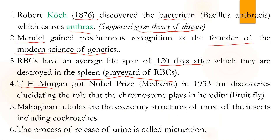Thomas Hunt Morgan received the Nobel Prize in 1933. He worked around 1910 and discovered that chromosomes play an important part in heredity. His experiments were on fruit fly, scientifically known as Drosophila melanogaster. Malpighian tubules are excretory structures found in insects — a good example is cockroach. The process of release of urine is known as micturition.